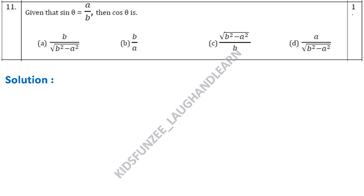Question 11: given that sin θ = a/b, what will be the cos θ value? If you remember the trigonometry identity between cos θ and sin θ, it is going to be a very simple question. Let's solve that. Sin θ is given as a/b, and sin²θ + cos²θ = 1.